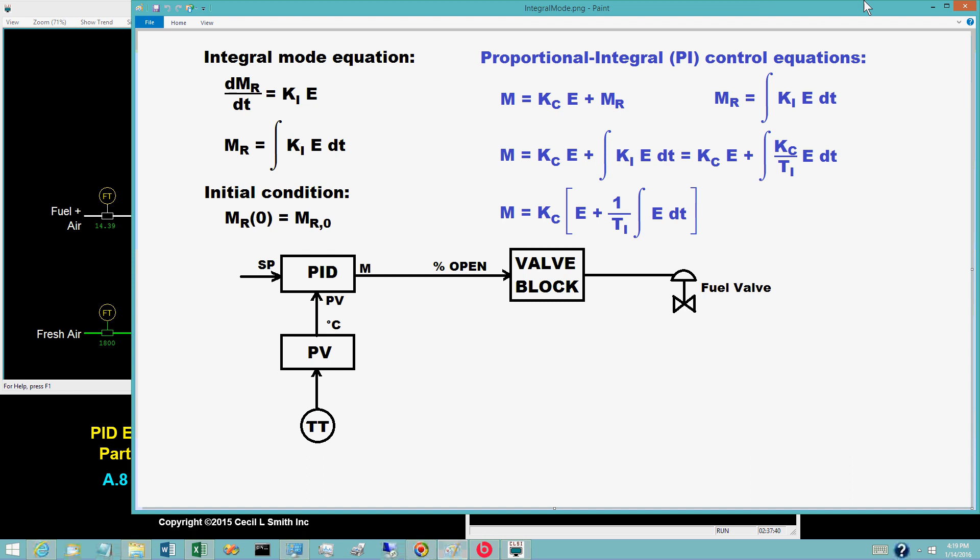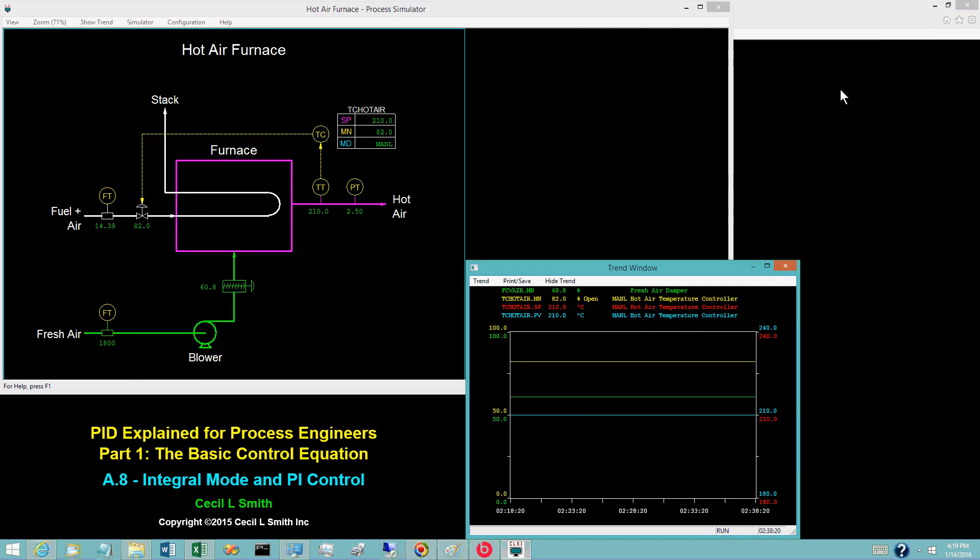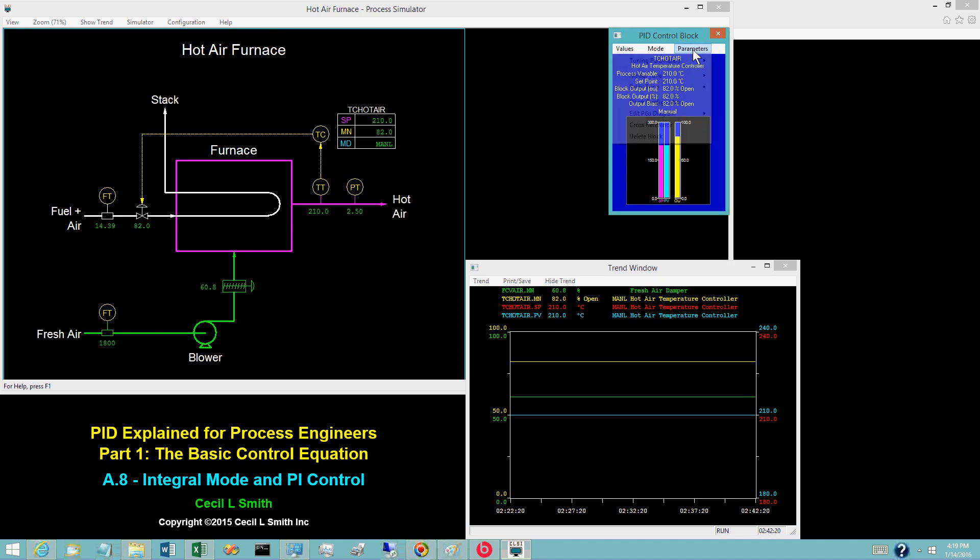Using the hot air furnace, we demonstrate that the integral mode eliminates offset and droop for both set point changes and disturbances.